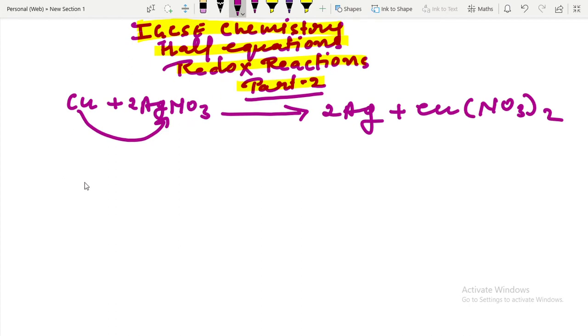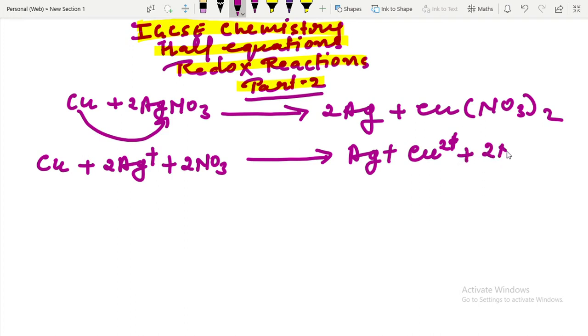Can we write the above reaction like this: copper plus silver ion plus nitrate ion converted into silver plus copper two plus cation plus nitrate ions. The states are aqueous, aqueous, and aqueous.